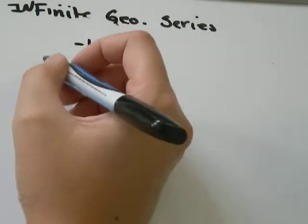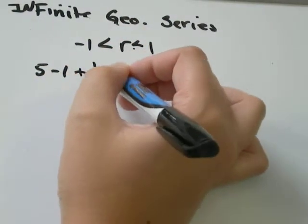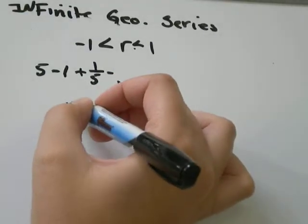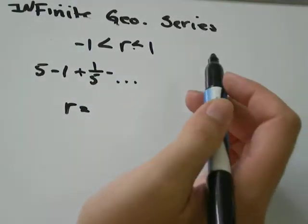So we've got the example 5 minus 1 plus 1.5 minus something. We don't know what, dot dot dot, goes on forever. So the first thing we're going to ask ourselves is, what's the common ratio? Because if the common ratio isn't between 1 and negative 1, we can't find the sum anyway.